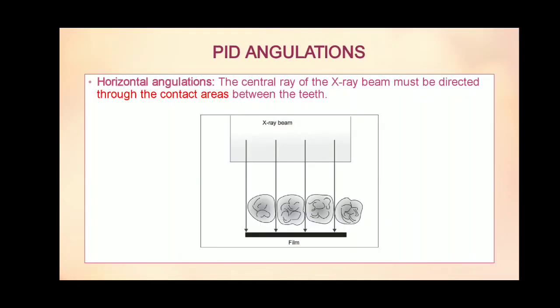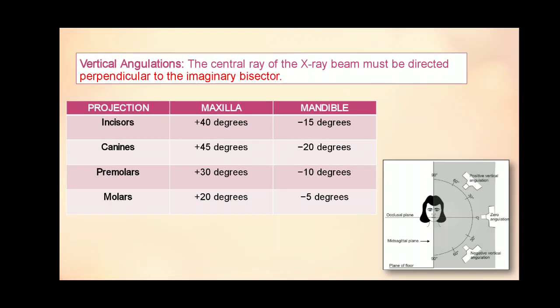Next comes PID angulation, which refers to position indicating device angulations. It includes horizontal and vertical angulation. For accurate horizontal angulation, the central ray of the X-ray beam must be directed through the contact areas between the teeth. For the vertical angulation, the central ray should be directed perpendicular to the imaginary bisector. The positive vertical angulation is the angulation above the occlusal plane, and the negative vertical angulation is the angulation below the occlusal plane.